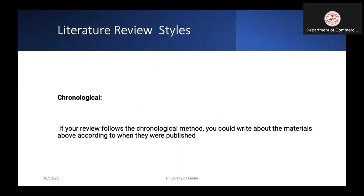The first one is chronological. This is like an old style in which scholars write reviews chronologically. History-based disciplines still use the chronological method of review. You could write about the materials according to the chronology in which they were published. So this is a chronological literature review.